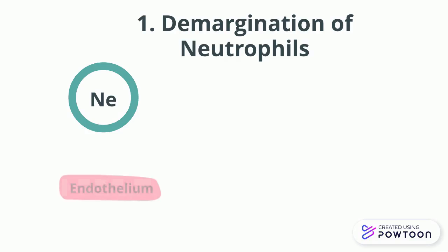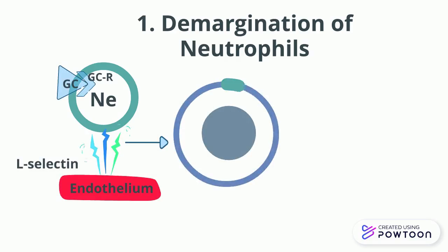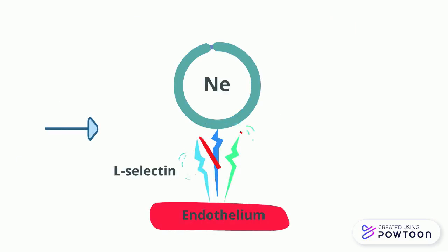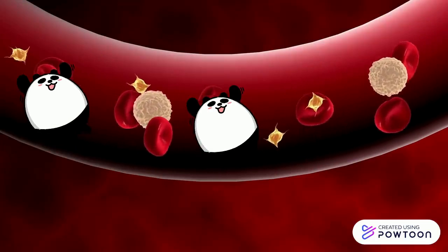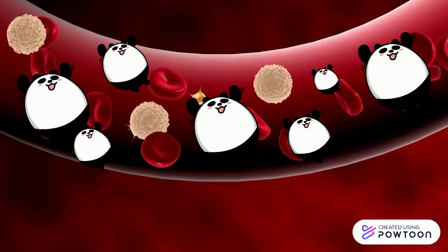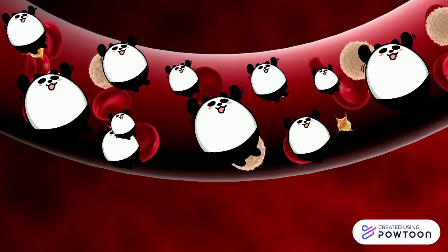The most important mechanism is demargination of neutrophils. Apart from circulating in the bloodstream, neutrophils are bound to the endothelial lining through adhesion molecules like L-selectin. When glucocorticoids bind to their specific receptor, this complex enters the nucleus and inhibits the mRNA of L-selectin. The result is that L-selectin production is decreased, so neutrophils cannot bind to the endothelium, making them wander freely in the bloodstream. This mechanism is also involved in glucocorticoids' anti-inflammatory properties.